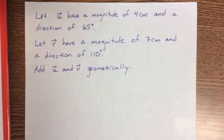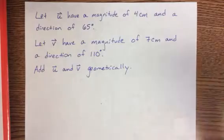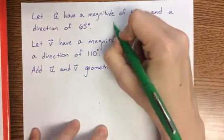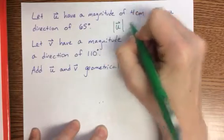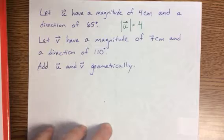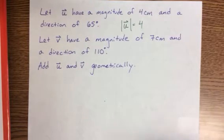They're telling us we have vector u with a magnitude of 4 centimeters and a direction of 65 degrees. Maybe we should have said the magnitude of u equals 4—that would be proper math notation. And then they tell us v has a magnitude of 7 and a direction of 110 degrees.